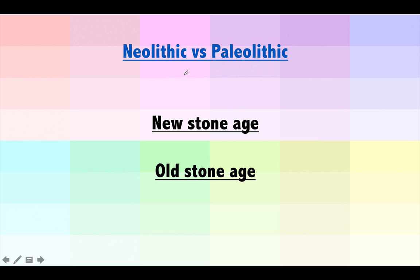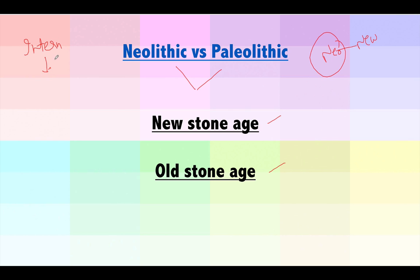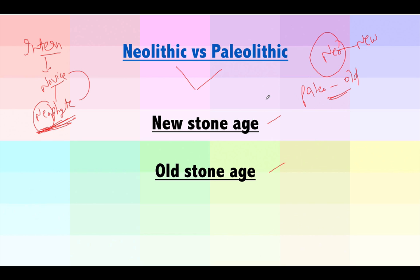There are two words: Neolithic and Paleolithic — which means new stone age and which means old stone age? The word Neo means new. An intern is someone new, a novice — you can also say he is a neophyte. So neophyte is also a good synonym for novice and intern. Now, Neo means new and Paleo means old. So new stone age is Neolithic and old stone age is Paleolithic. If you are consuming a Paleo diet, you're eating what your forefathers ate.